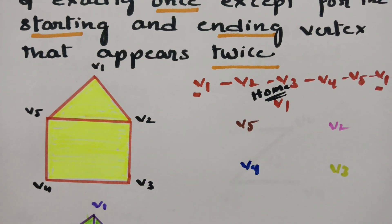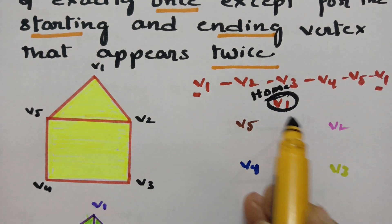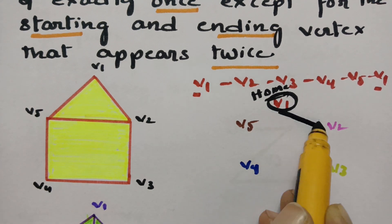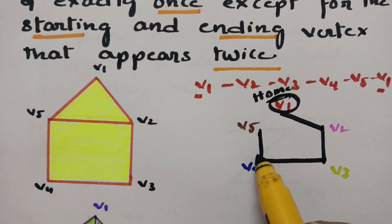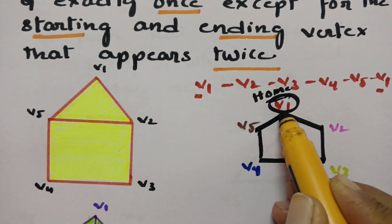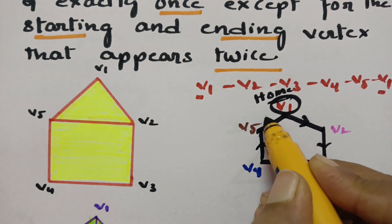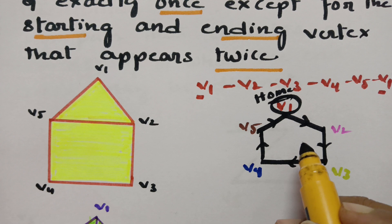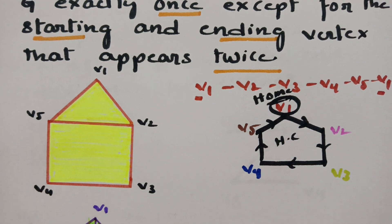Path is different, circuit is different. From wherever we start, we have to end with that same vertex and cover all the remaining vertices. So the walk is v1 to v2, v2 to v3, v3 to v4, v4 to v5, and again coming back to v1. This is the closed circuit — this is nothing but the Hamiltonian circuit.